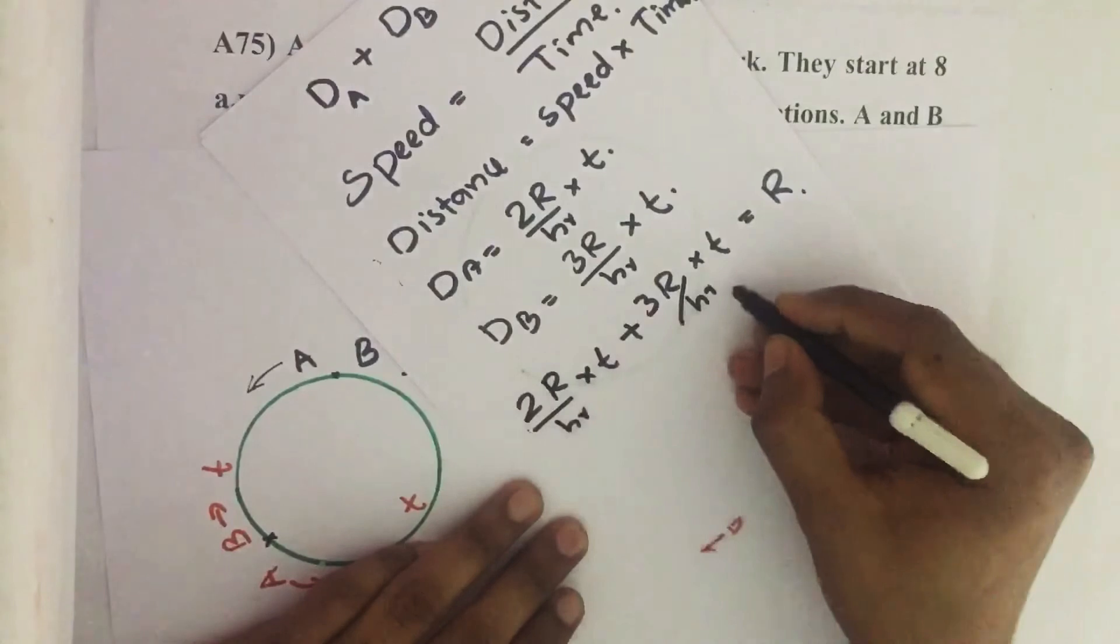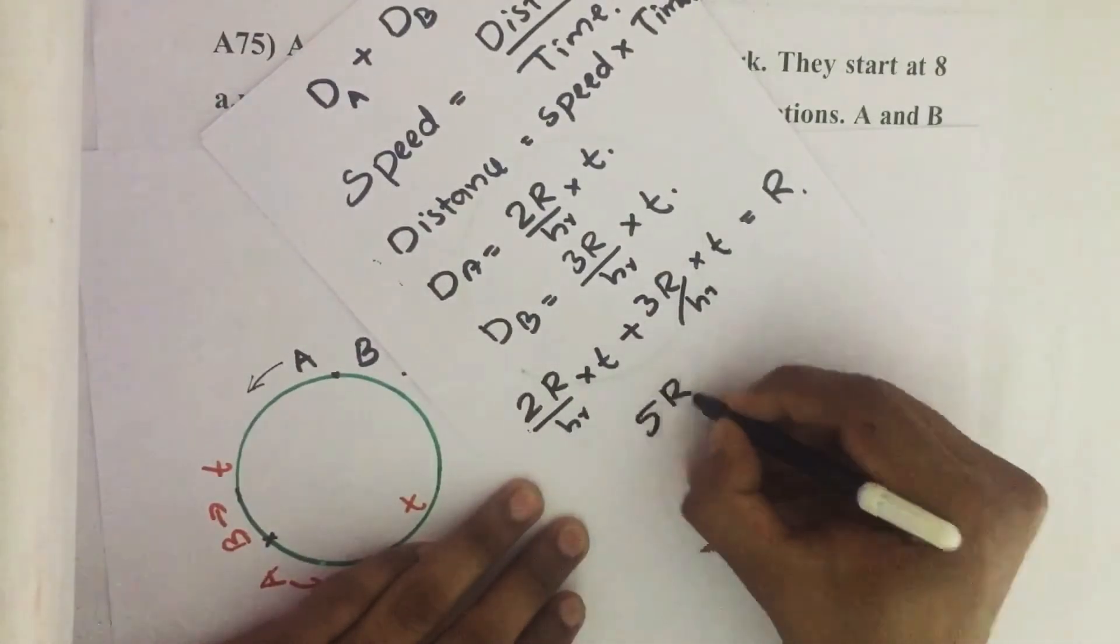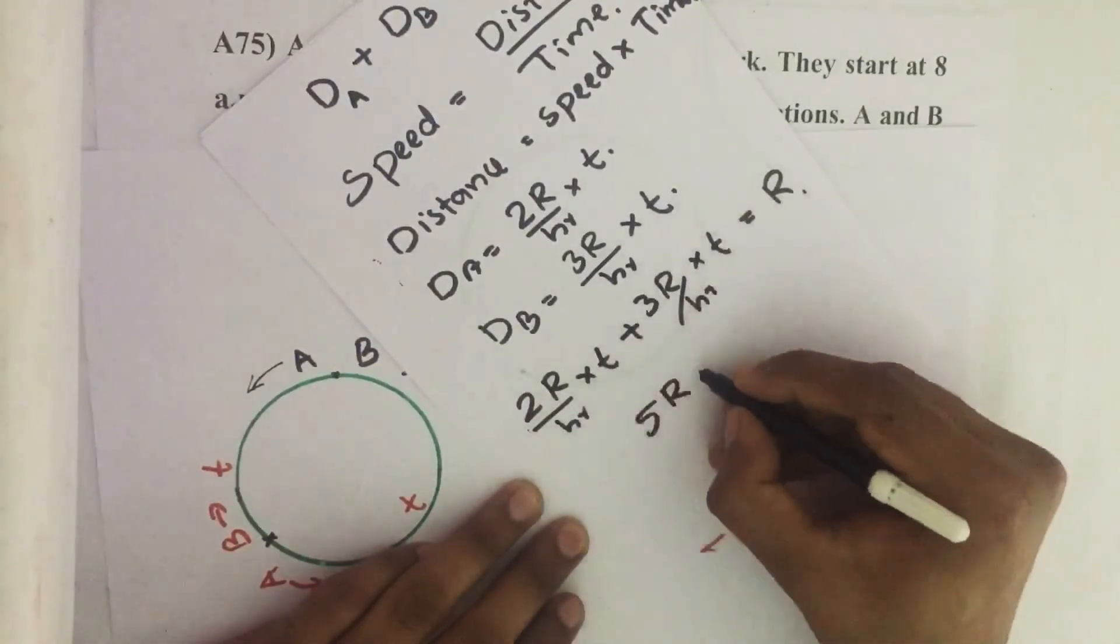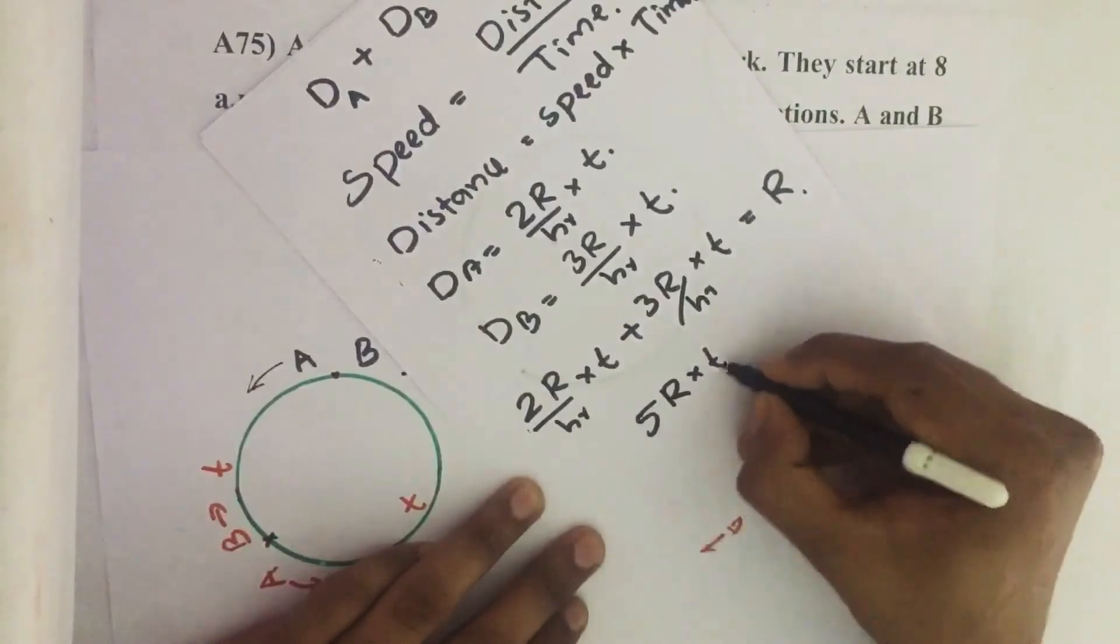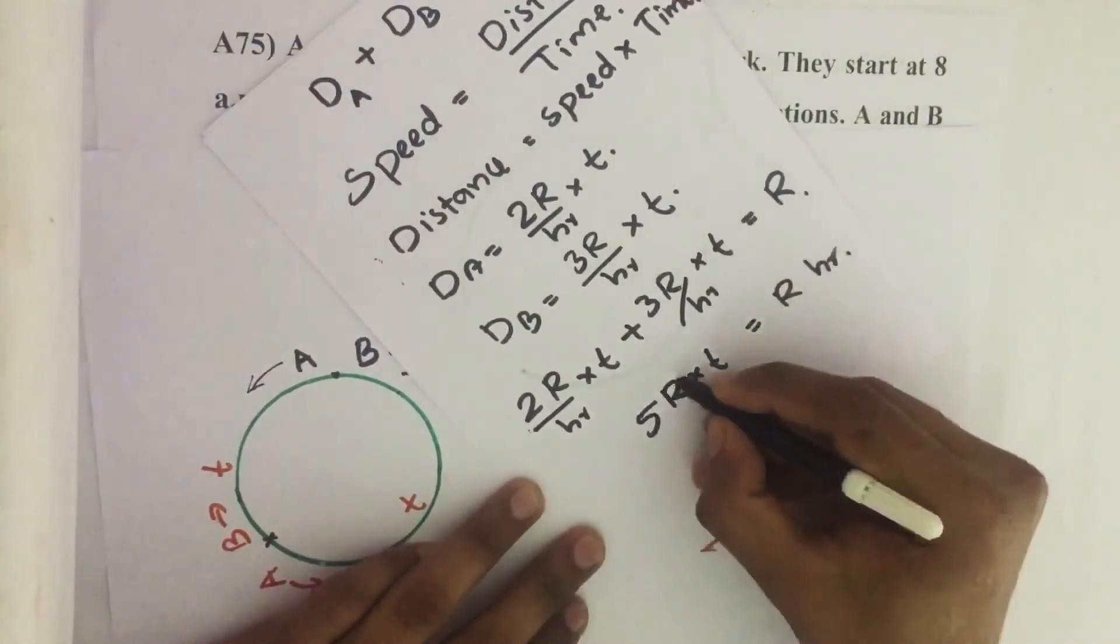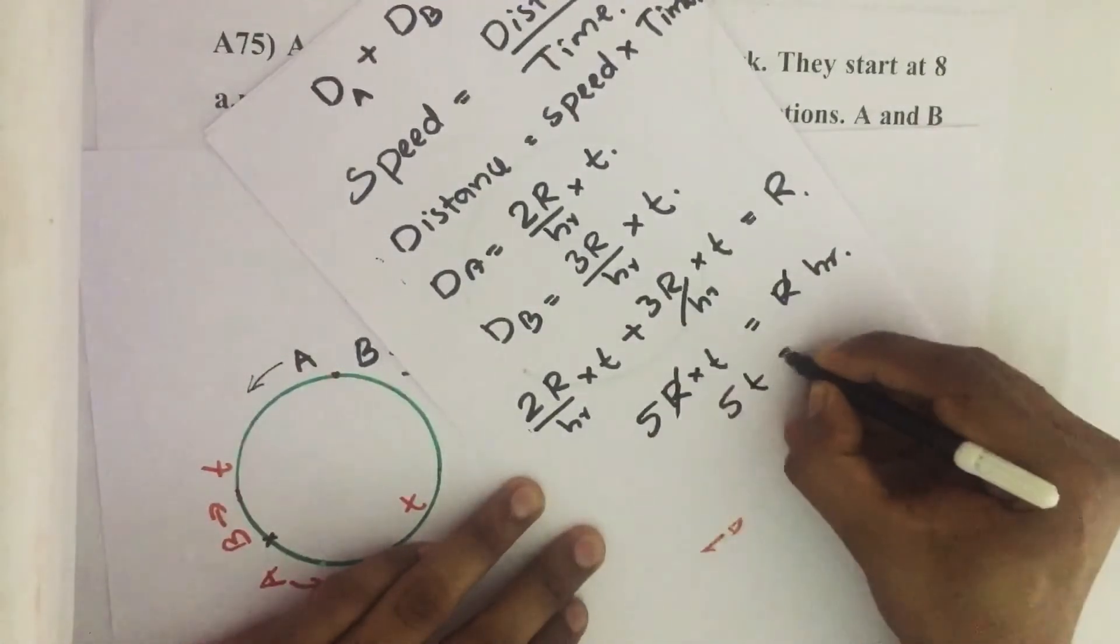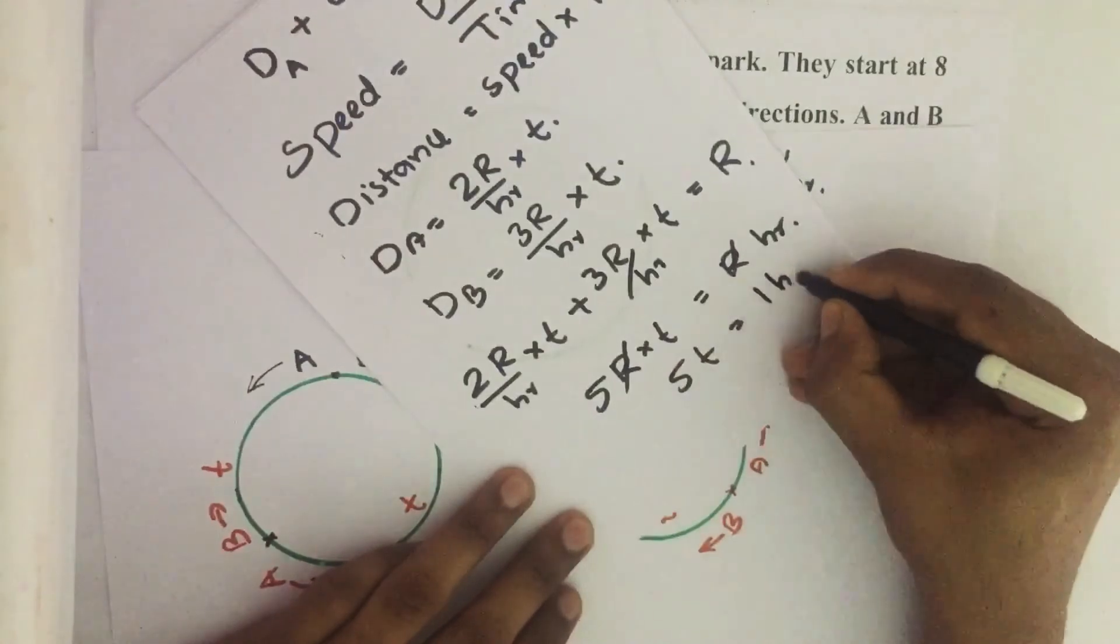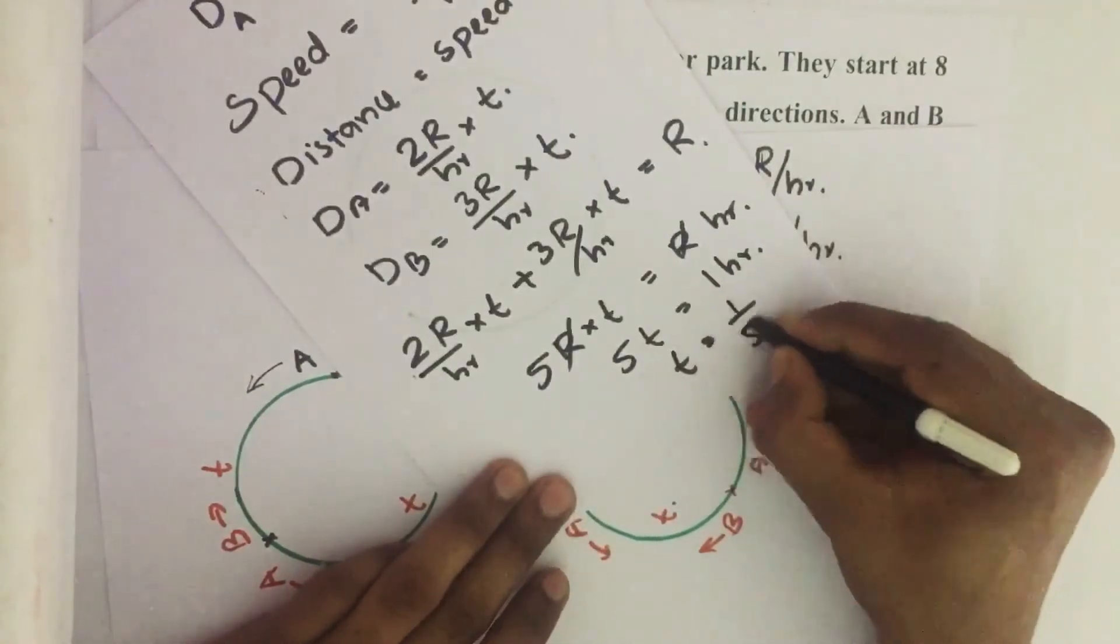So this is equal to 5R per hour. Denominator is the same, so we can add the numerator. 5R per hour into T equals R. R and R cancel out. Then 5T equals 1 hour. T equals 1 by 5 hour.